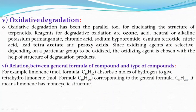Next is oxidative degradation, which has been a key tool for elucidating the structure of terpenoids. Reagents used include ozone, acid, neutral or alkaline potassium permanganate, chromic acid, sodium hypochlorite, osmium tetroxide, nitric acid, lead tetraacetate, and peroxy acid.